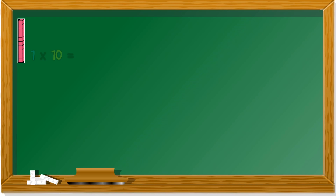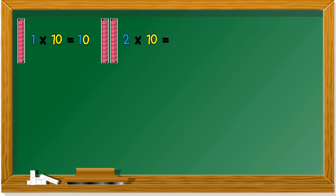Kids, do you remember this? These are blocks of 10. One set of blocks of 10 is 1 times 10, so it's 10. If we have two sets of blocks of 10, that is 2 times 10, so we get 20.